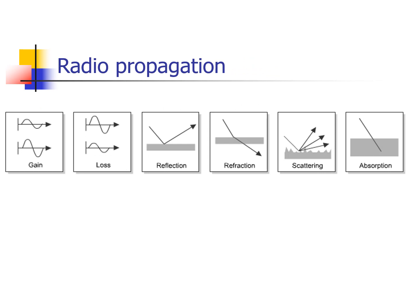As radio waves propagate into the atmosphere, they follow the properties of EM waves such as gain or constructive interference, loss or destructive interference, reflection, refraction, scattering, and absorption.